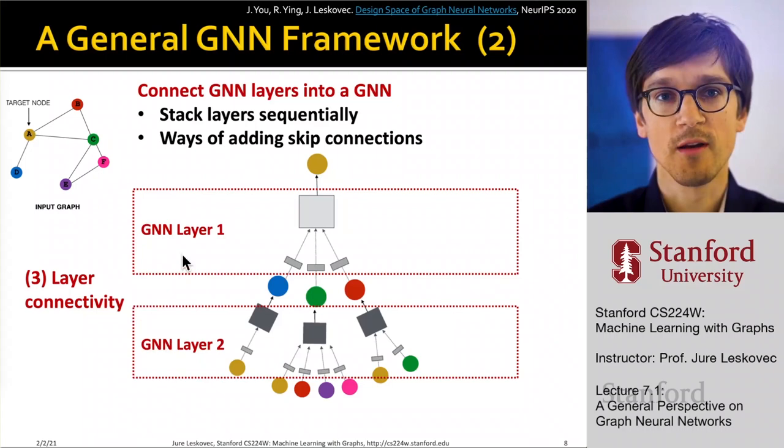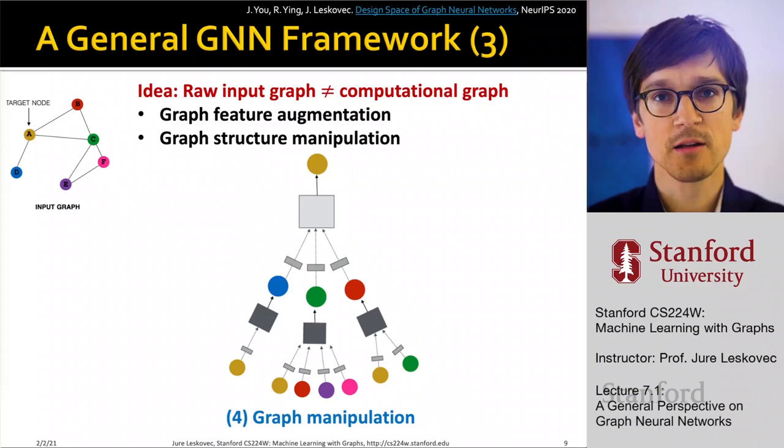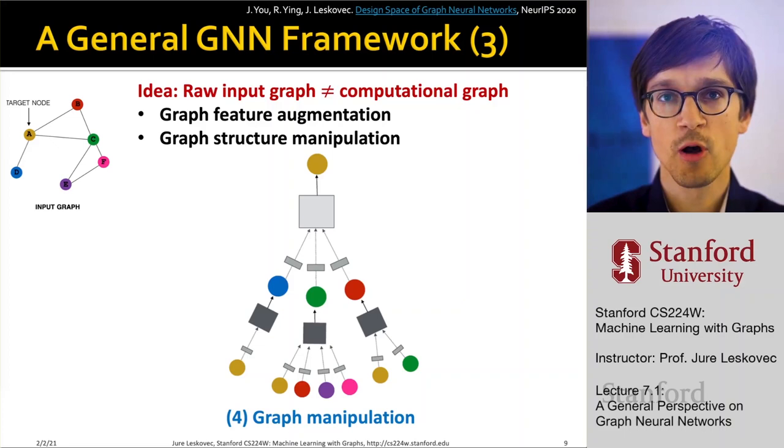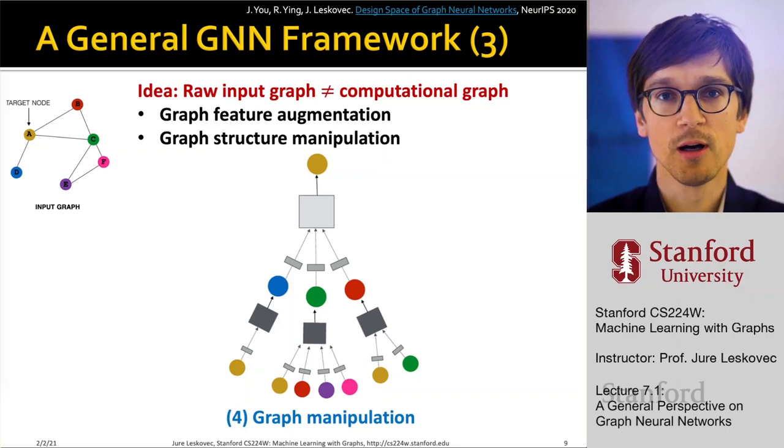And then the last part that is an important design decision is how do we create the computation graph. Do we say that the input graph equals the computation graph, or do we do any kind of augmentation? Maybe we want to do some feature augmentation, or we want to do some graph structure manipulation. In this lecture, I'm just kind of giving you an overview of the areas where I will be going to provide more detail and where we are going to go deeper. So that's the fourth area where important design decisions have to be made.